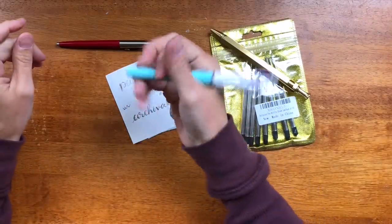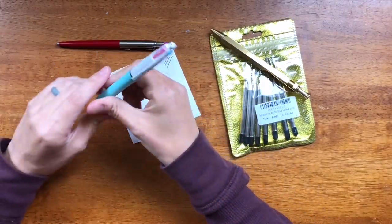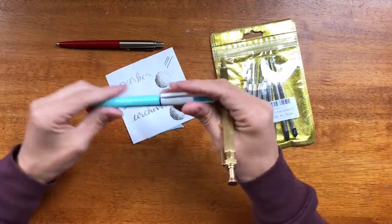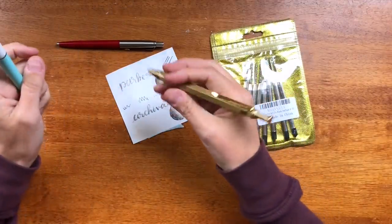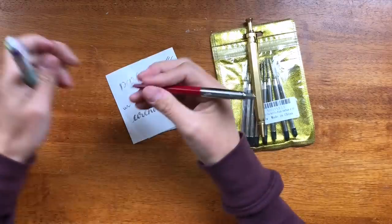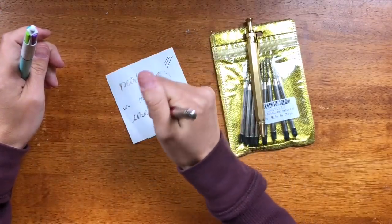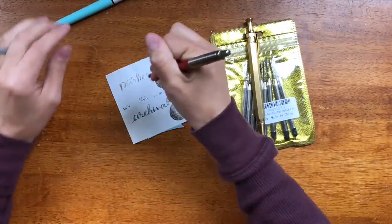I also am used to a thicker barrel pen. I use a Pilot Vanishing Point for my daily journal, and I'm just used to these thicker barrels. So this is really nice compared to this where my hand kind of feels like it cramps up around it.